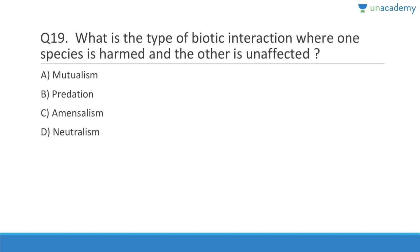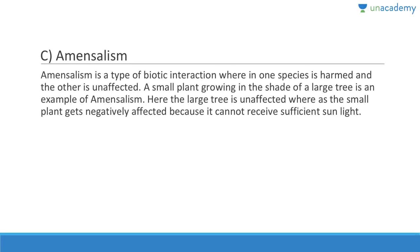Question nineteen: What is the type of biotic interaction where one species is harmed and the other is unaffected? It is called amensalism, and it especially happens with some plants that secrete certain chemicals — a process called allelopathy. Amensalism is a type of biotic interaction wherein one species is harmed and the other is unaffected. A small plant growing in the shade of a large tree is an example — the small plant gets negatively affected because it cannot receive sufficient sunlight.